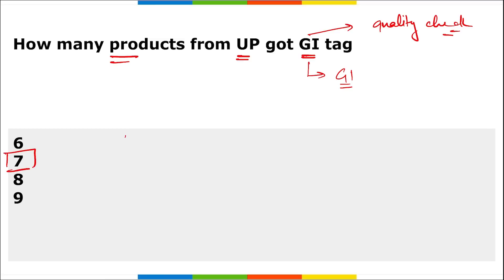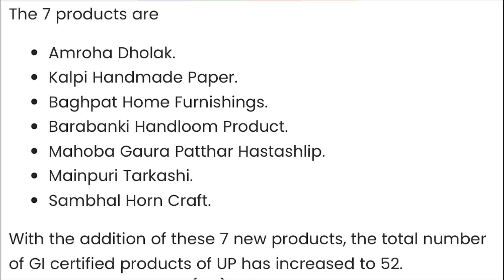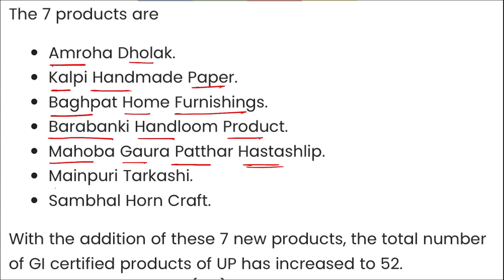The GI Registry, that is the Geographical Indication Registry, is done in Chennai, Tamil Nadu, under the Department for Promotion of Industry and Internal Trade. The Ministry of Commerce and Industry recognized seven handicraft products from Uttar Pradesh: Amroha Dholak, Kalpi Handmade Paper, Baghpat Home Furnishings, Barabanki Handloom Product, Mahoba Gaura Pathar, Hastal Ship, and Sambhal Horn Craft. With this, the total number of GI-certified products from UP alone stands at 52.